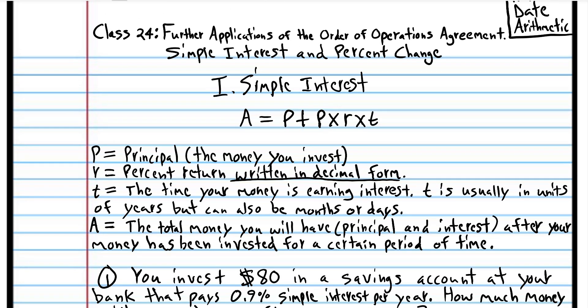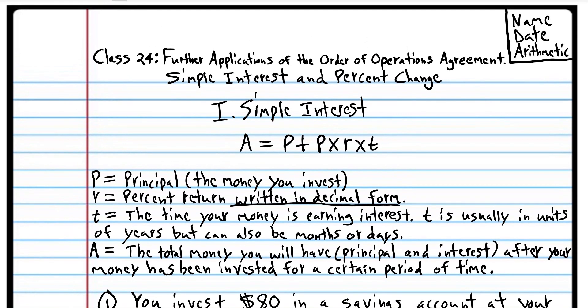It's also important to understand that when you put your money in a savings account at a bank, you're actually loaning your money to the bank, and the bank is using it. But the opposite situation also works with this formula — that is when the bank loans you money. If the bank loans you money, the formula works in the opposite direction as well.